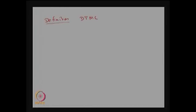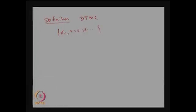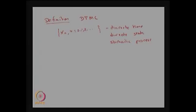Consider a discrete time discrete state stochastic process. This is a discrete time discrete state stochastic process. Assume that Xn takes a finite or countable number of possible values. Unless otherwise mentioned, the set of possible values will be denoted by the set of non-negative integers.